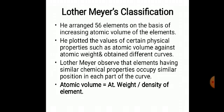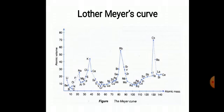How did he plot a graph? He plotted atomic weight versus atomic volume. This is a main point: according to Lothar Meyer's classification, the fundamental property of the element is atomic volume, whereas in Newland's law the fundamental property is atomic mass or atomic weight. In Lothar Meyer's classification, the fundamental property is atomic volume. The Lothar Meyer graph has atomic volume on one axis and atomic weight on the other.